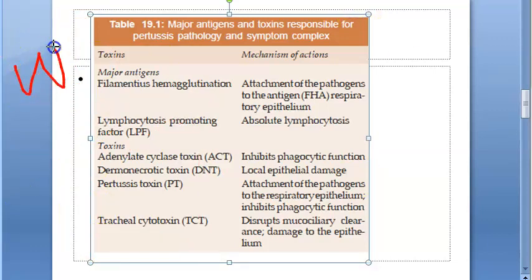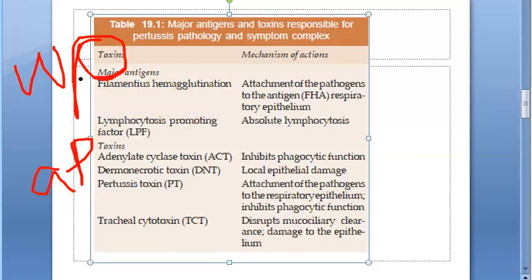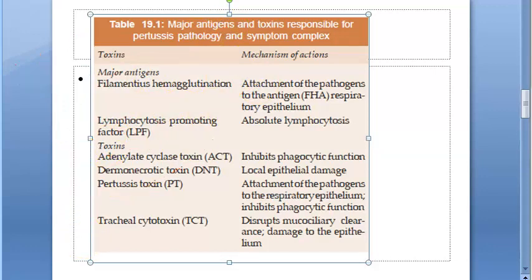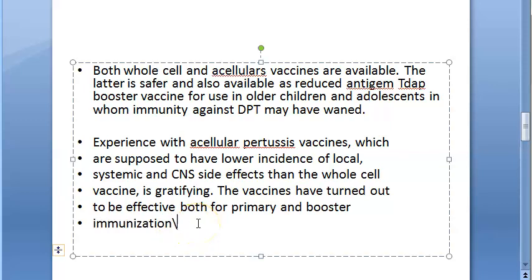The whole cell vaccine uses the entire inactivated Bordetella pertussis organism. In the acellular vaccine, only the purified components of Bordetella pertussis — such as the inactivated pertussis toxin — are present. Only the toxin is there, so it has less side effects. Whole cell contains the whole organism; acellular contains only the toxins. The acellular one may also be a little more expensive.